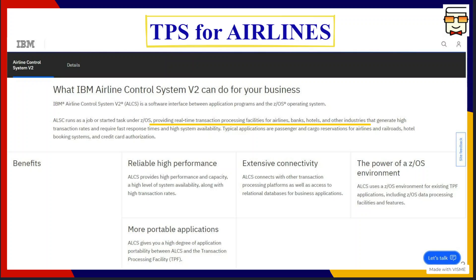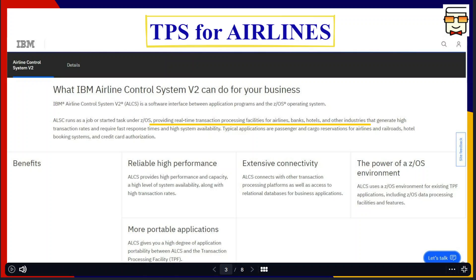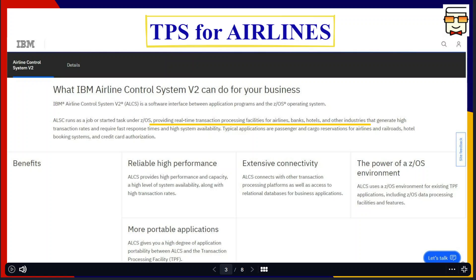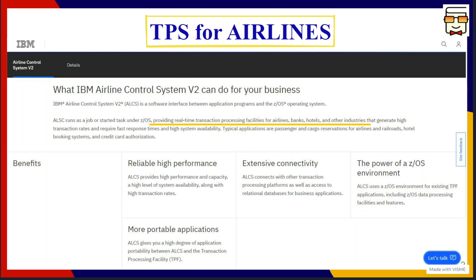This is an example of a transaction processing system implemented by IBM for airline management — its name is Airline Control System v2. It allows processing and storage of information and transactions for industries that generate a high number of transactions and require real-time processing of data. It allows reliable performance, correct transactions, and quick retrieval of information as and when required.